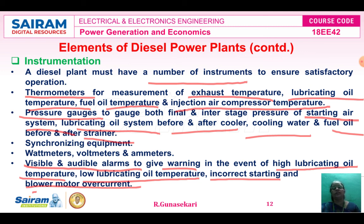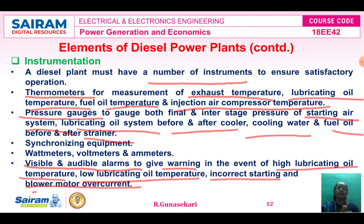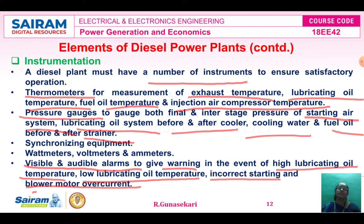In summary, the diesel power plant is divided into seven systems: fuel system, air intake system, lubricating system, cooling system, exhaust system, starting system, alternator, and instrumentation. All components in the layout come under these seven systems. For the exam, questions may ask you to explain the diesel power plant with a diagram, or explain the elements of diesel power plant in detail — these are minimum 8-mark to maximum 10-mark questions. Thank you students for watching this video.